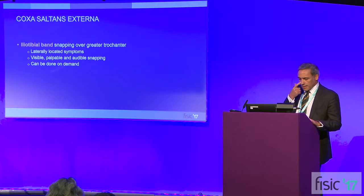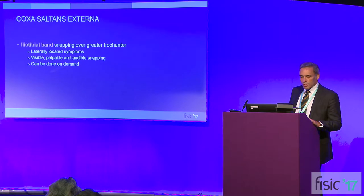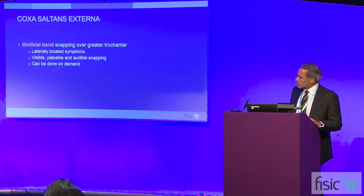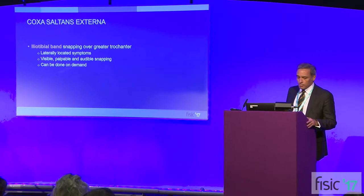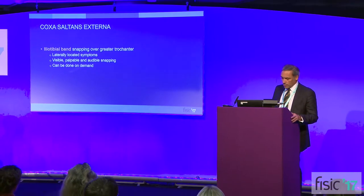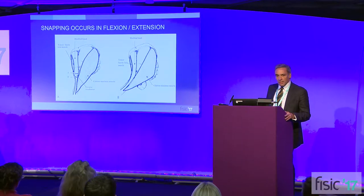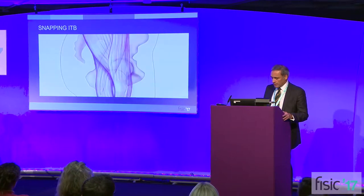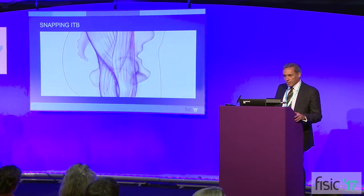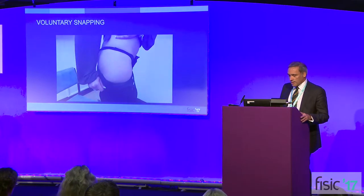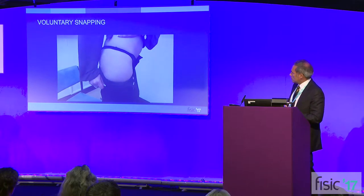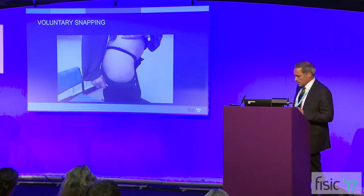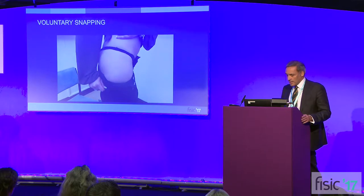The iliotibial band snapping occurs as it snaps over the greater trochanter and always gives you laterally located symptoms. It can be visible, palpable, and certainly audible, and it can also be done on demand. Snapping occurs as you take the hip through a flexion-extension manoeuvre, and you can see the band snapping over the trochanter — a nice little snapping ITB going over the trochanter.